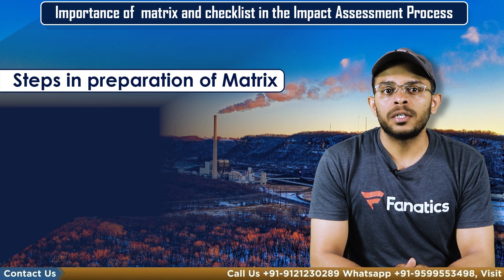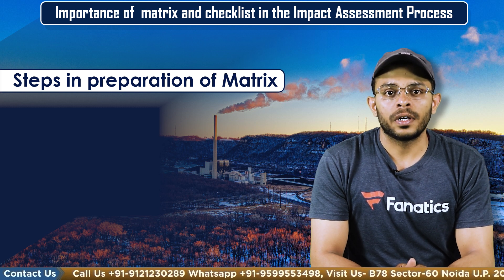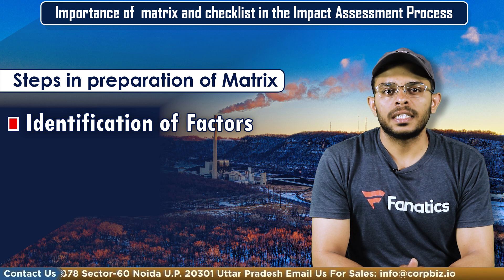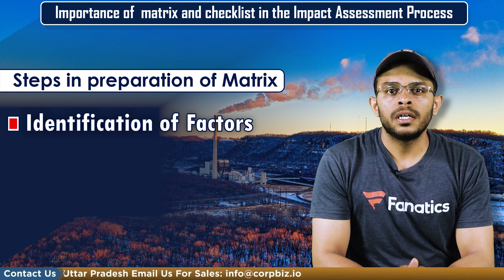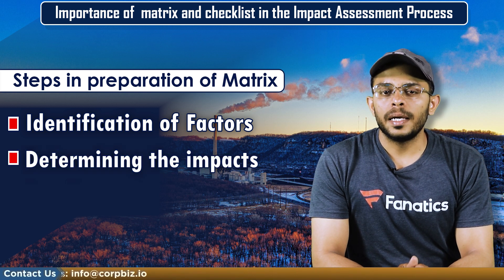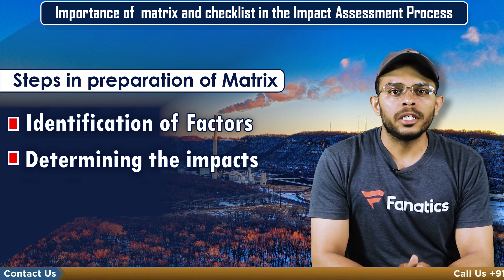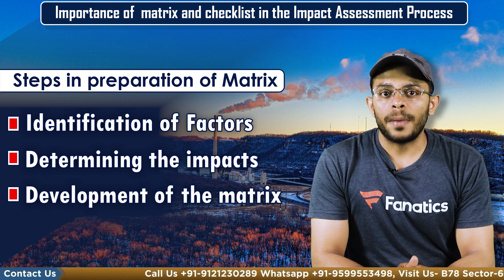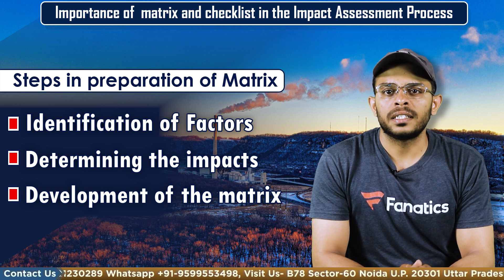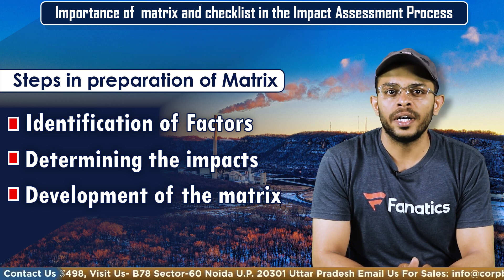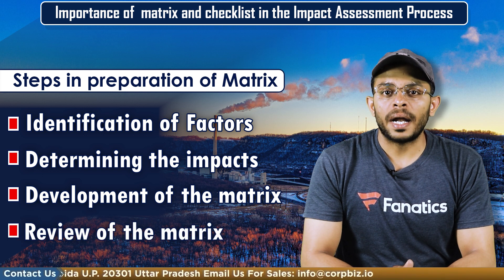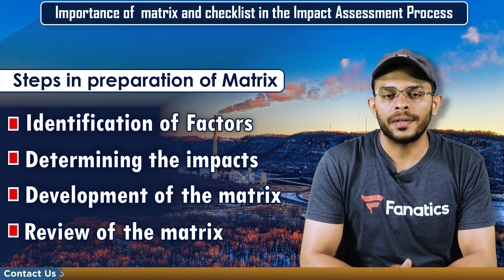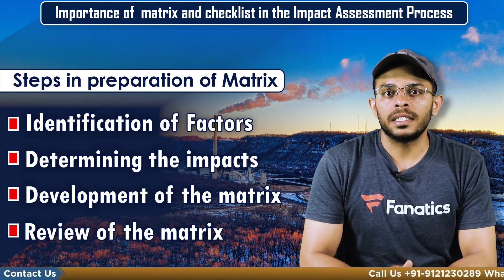The steps needed to prepare a matrix and checklist for an EIA are as follows. The first step is identification of the factors — analyzing environmental factors that may be impacted such as air quality, water quality, biodiversity, noise, and social impacts. The second is determining the impacts, which involves evaluating the severity, duration, and likelihood of each impact and considering any regulatory requirements or guidelines. Next is development of a matrix — creating a table with columns for environmental factors and rows for potential impacts, using symbols or ratings to indicate the significance of each effect. Then comes review of the matrix to ensure data accurately reflects the potential environmental impacts of the proposed project. Lastly, the consultant will include the matrix in the EIA process.